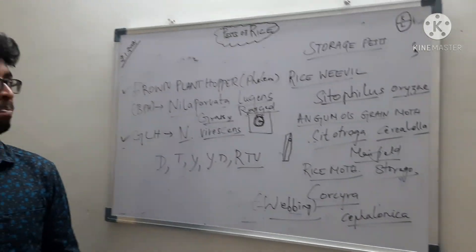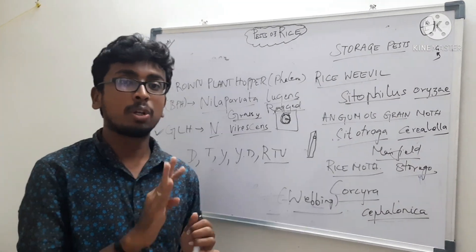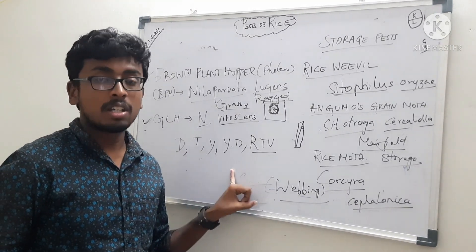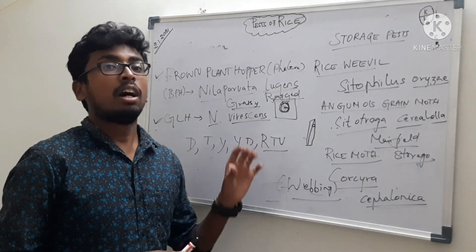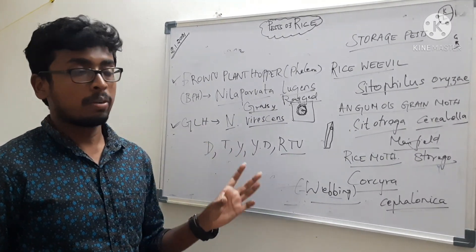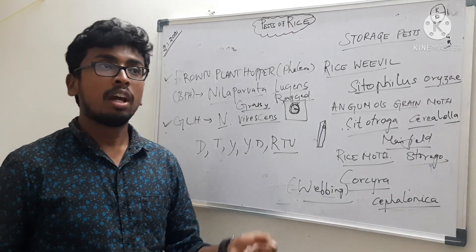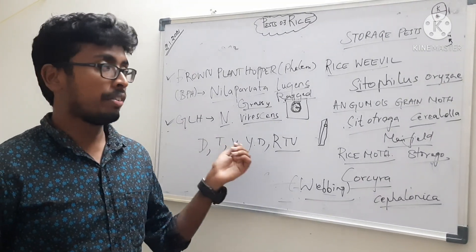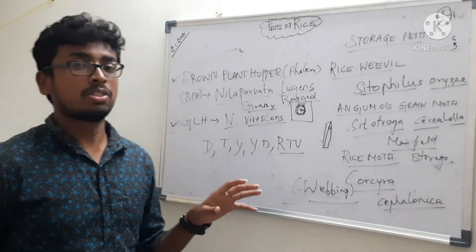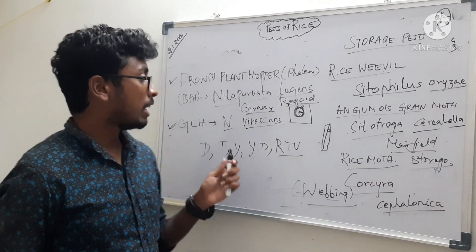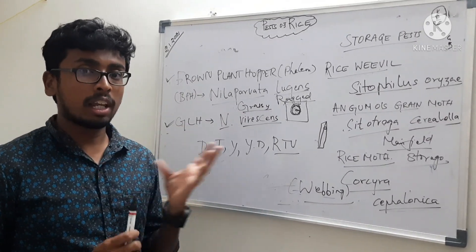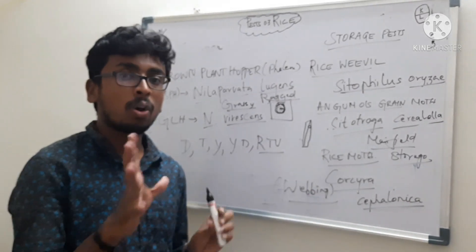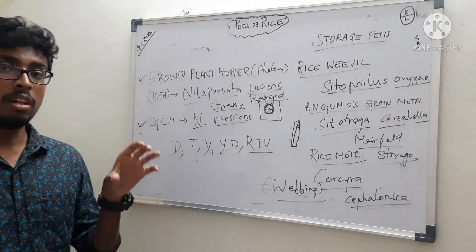To summarize, we have covered rice pests classified into four types. Nursery pests include thrips, swarming caterpillar, and paddy stem borer. In the vegetative stage, we have sucking pests including BPH and green leaf hopper. In the reproductive stage, we have seen rice stem borer white ear, rice caseworm, ear head bug, and mili bug. In storage pests, we covered rice weevil, angoumois grain moth, and rice moth. These are all the major pests occurring in rice causing various types of damage.